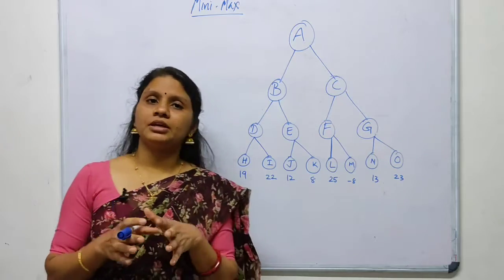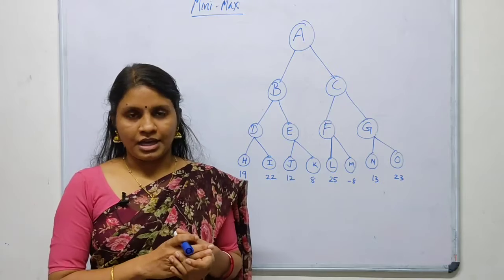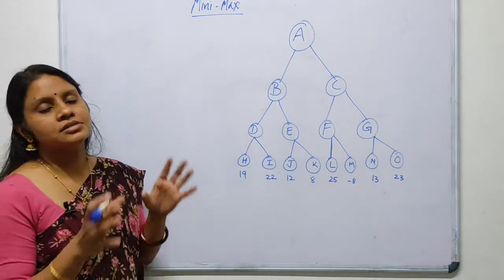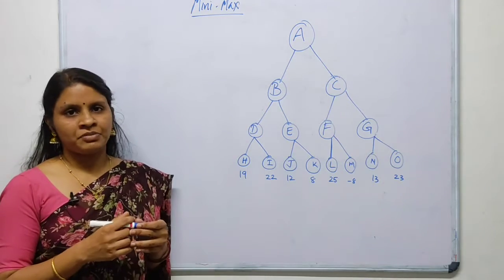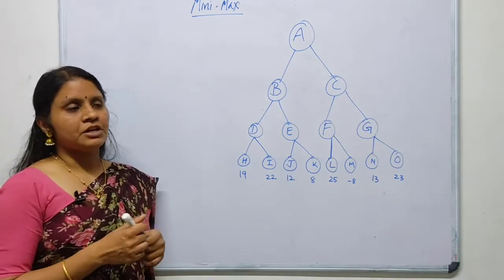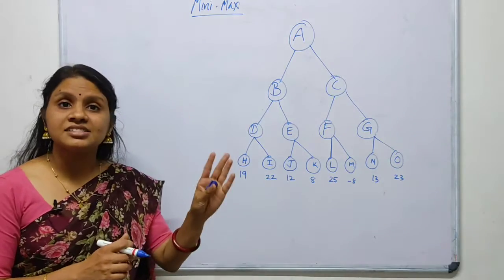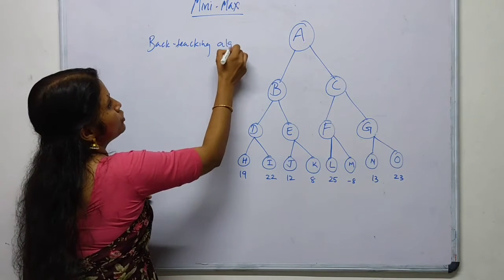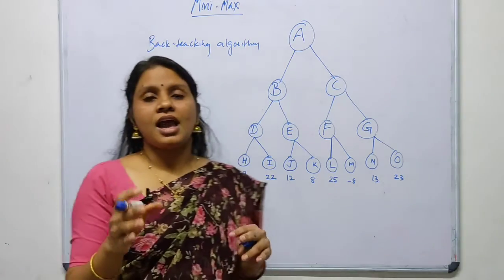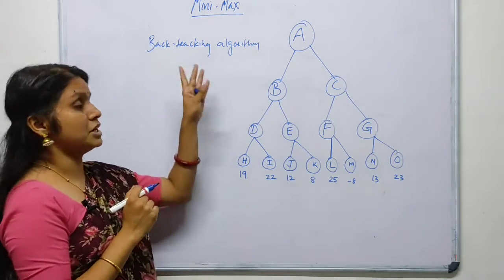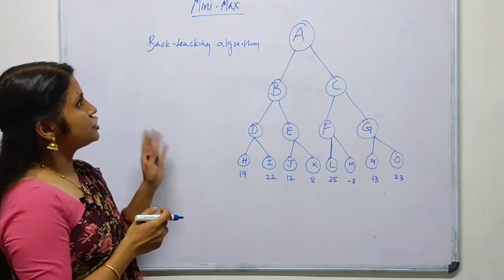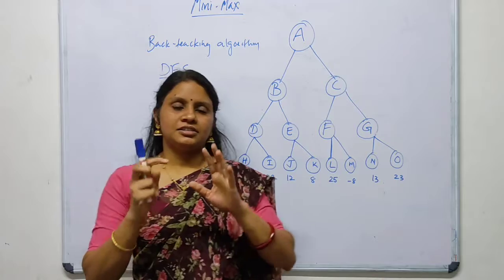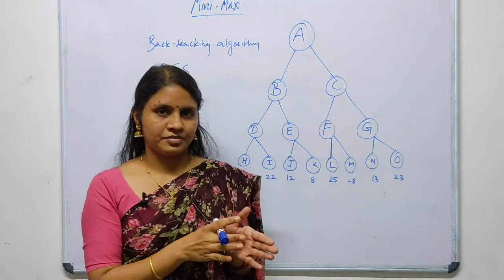First, you should remember that for every game we construct game trees. For complex games the searching in game trees may not be possible, so game tree construction is only applicable for small games. The minimax algorithm is a recursive or backtracking algorithm used for decision making and game theory in artificial intelligence. It uses a depth first search strategy.